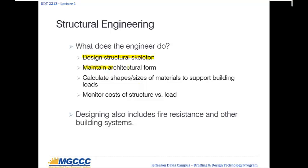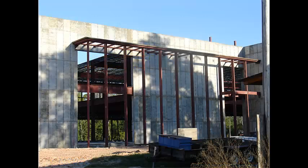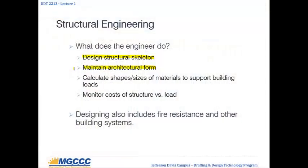In doing that, he's going to try to maintain the architectural form — keeping the look of it, the flow of it, everything that the architect and the client decided upon during their initial design stages. He's going to try to maintain that while still creating a structural system that will support the building and everything involved in it. That can sometimes be a challenge in itself. He's going to calculate shapes and sizes of materials to support the building loads. We have dead loads and we have live loads. Dead loads are the ones that are part of the building itself — foundation, structural columns, wood, steel, concrete, anything that's part of the actual building.